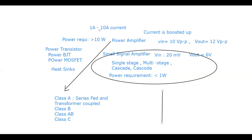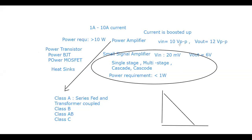You must have studied the DC load line. In the study of power amplifiers, you will also study something called the AC load line, which is extremely important and you should know how to draw it properly. This was the overview of power amplifiers, covering different classes, power transistors, power BJT, power MOSFET, heat sinks, power requirements, and current requirements.